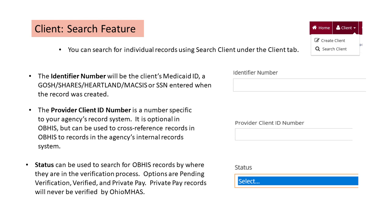The status field can be used to search for OBIS records according to where they are in the verification process. Options are pending verification, verified, or private pay. Private pay records are never processed or verified by Ohio MHAS. We will explain more about the private pay option later.